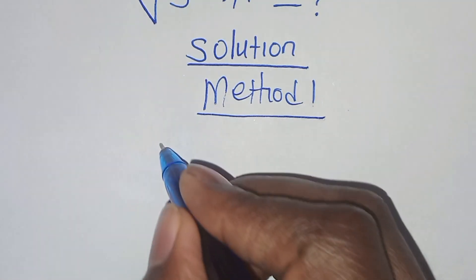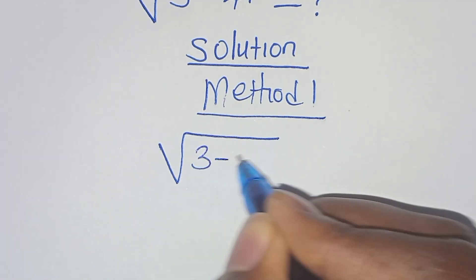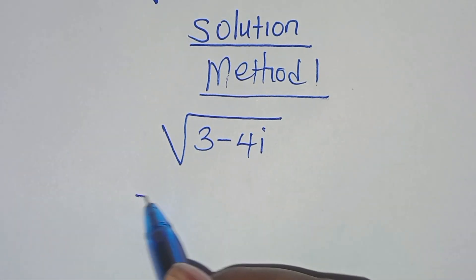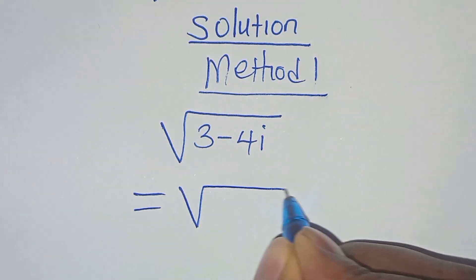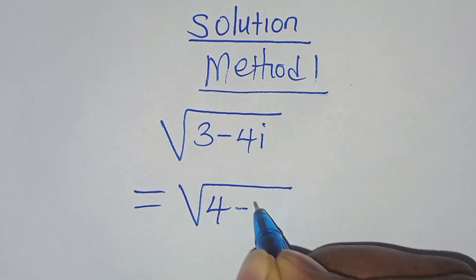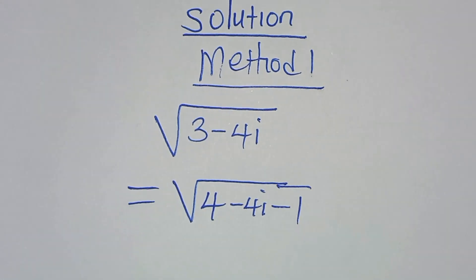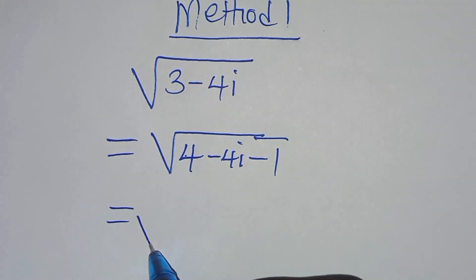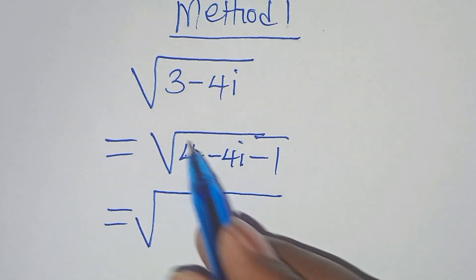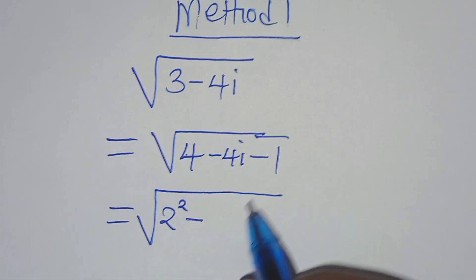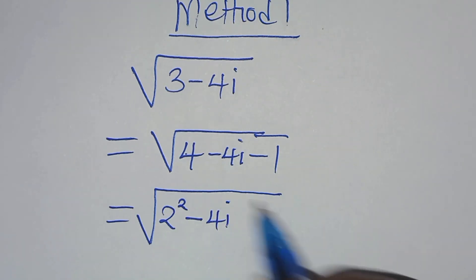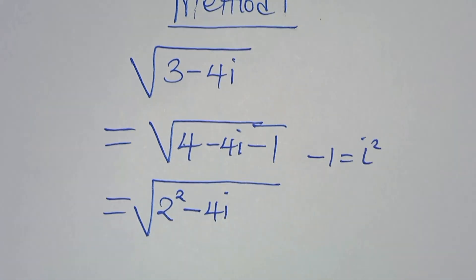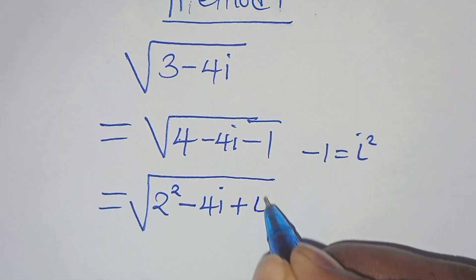So we have the square root of 3 minus 4i. We can express the square root of 3 minus 4i as the square root of 4 minus 4i minus 1. If you say 4 minus 1, this is the same thing as 3. So the next step is that we can express 4 as 2 to the power of 2, minus 4i, then minus 1. This is the same thing as i squared, so we can express this as plus i squared.